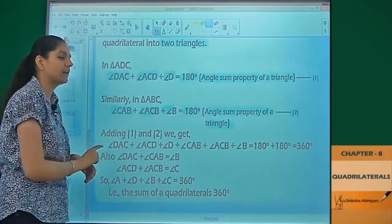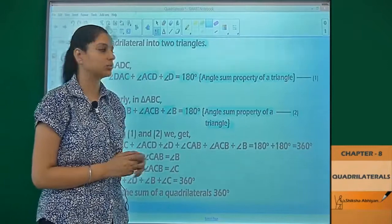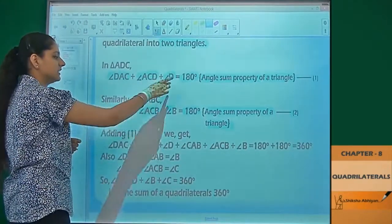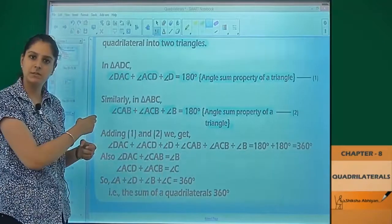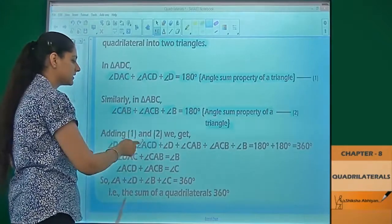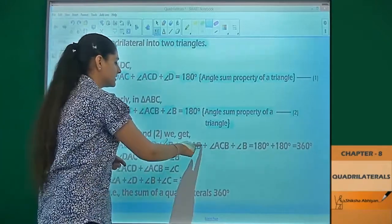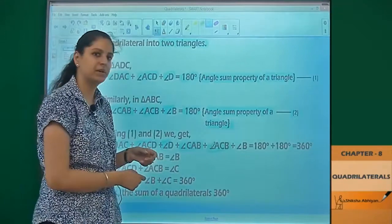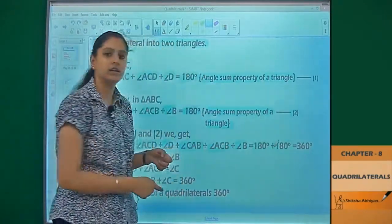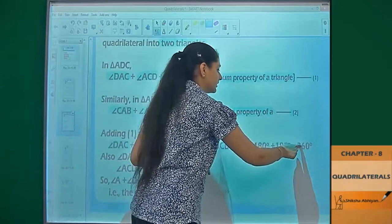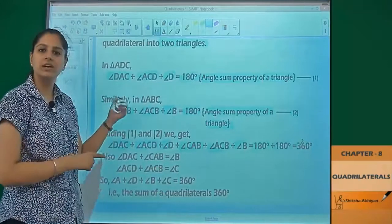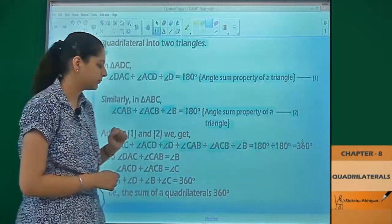Now if I add equation number one and equation number two, adding both LHS and RHS, what will happen? The three angles from this triangle and three angles from that triangle will be added together. That is angle DAC plus angle ACD plus angle D plus angle CAB plus angle ACB plus angle B is equal to 180 degrees plus 180 degrees, which is further equal to 360 degrees. So these six angles that we had, their sum comes out to be 360 degrees.